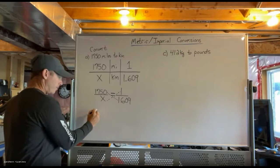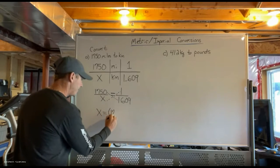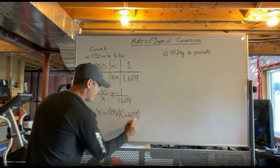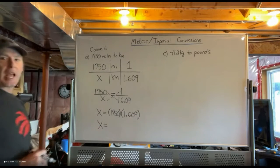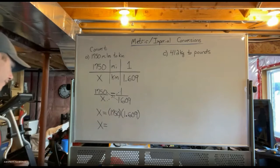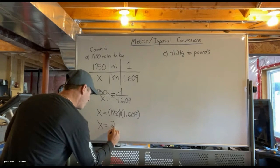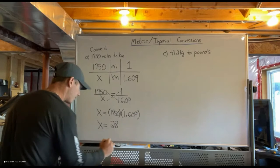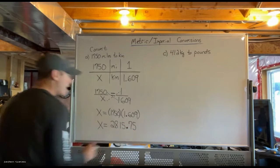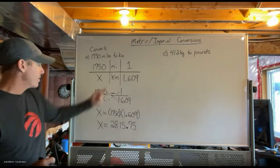When I cross multiply, one times x is just x, and then I have 1,750 times 1.609. As I mentioned, at the end of these questions you're either dividing or multiplying — this time we're multiplying. So I take 1,750 times 1.609 and I get 2,815.75. Don't forget to put the units in — the table tells you x is kilometers.